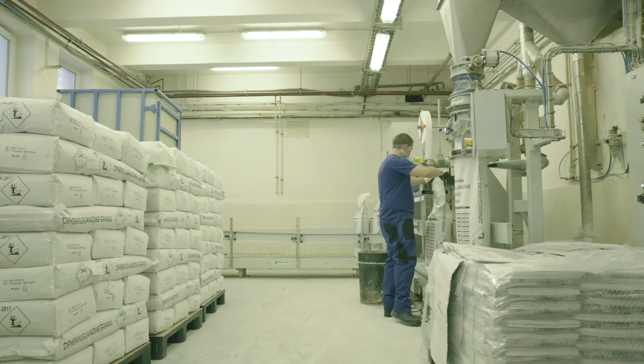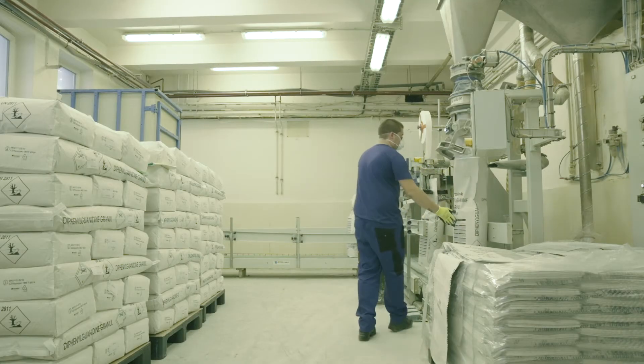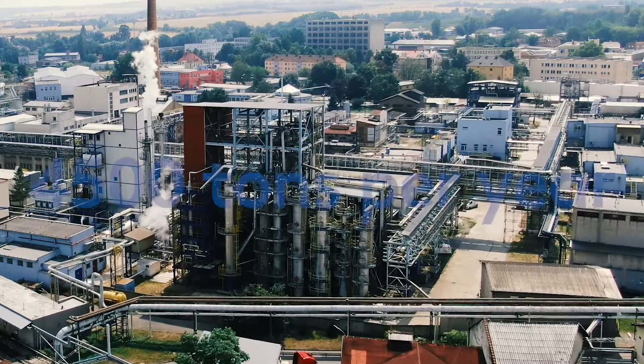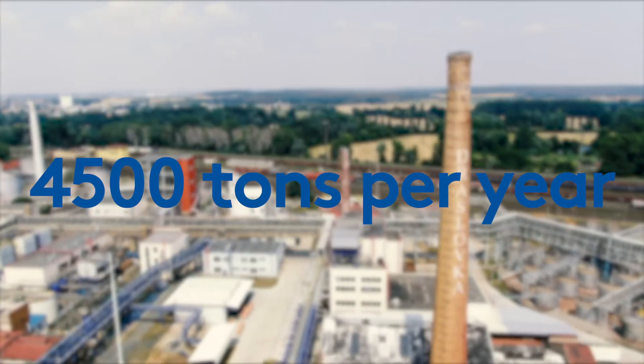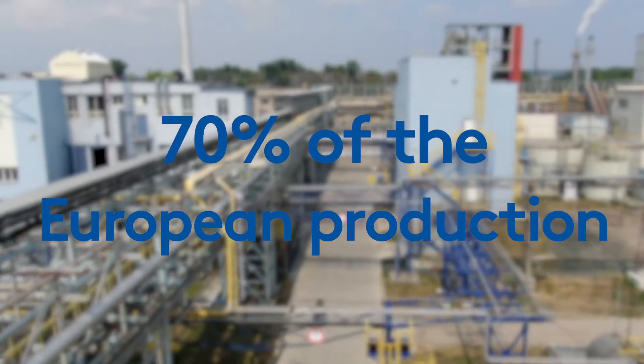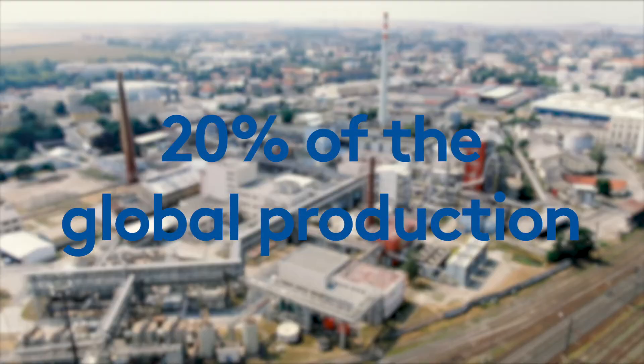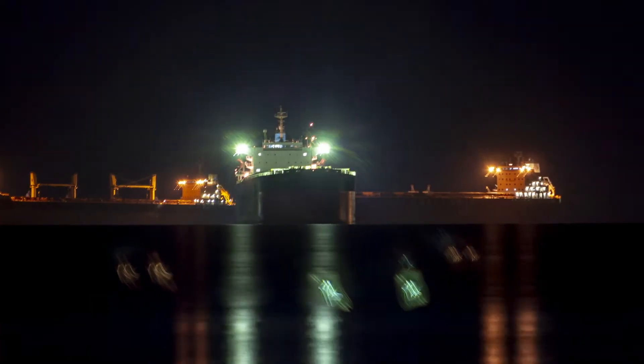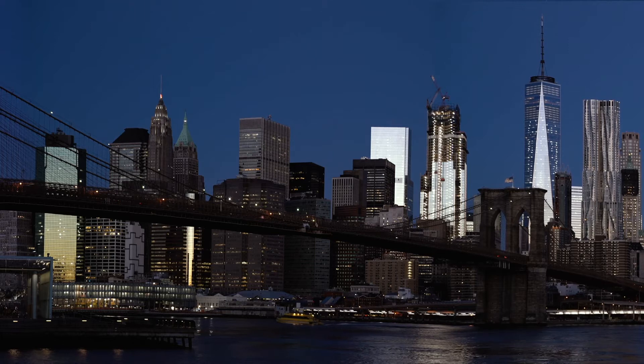Draslovka has an important position in the production of DPG, as the volume of its production reaches 4,500 tonnes per year, which is 70% of the European and about 20% of the global production. Almost 90% is for export to foreign markets.